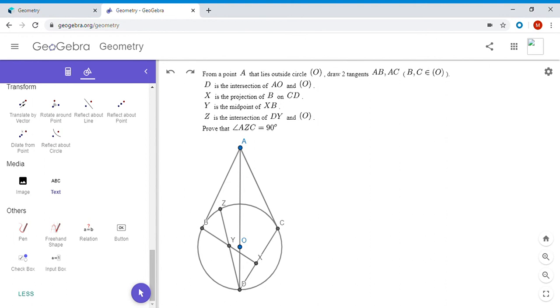We let X be the perpendicular from B to CD, and then we let Y be the midpoint of XB, and Z is where DY intersects the circle again. So we want to show that angle AZC is 90 degrees. So how do we begin here?